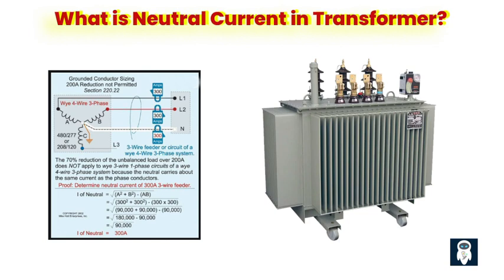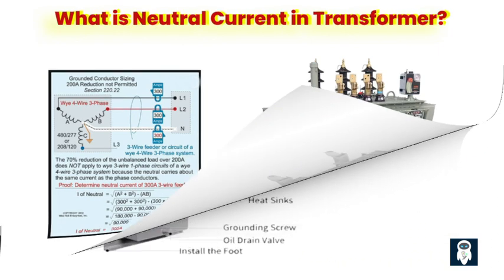Neutral current in medium voltage transformers is an important concept to understand for anyone working with electrical systems. It refers to the flow of electric current through the neutral point of the transformer — in simpler terms, it's the current that flows back to the power source through the neutral wire.